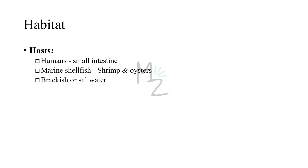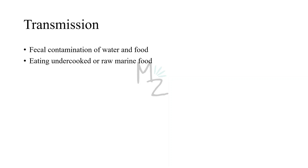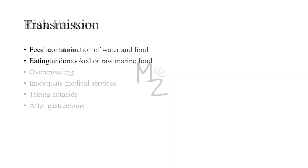Habitat. Human beings are the hosts of Vibrio cholerae, as it causes infections in the small intestine. The main animal reservoirs are marine shellfish such as shrimp and oysters. Vibrio cholerae is also found in brackish or salt water. Transmission. Vibrio cholerae is transmitted by fecal contamination of water and food, and also by eating undercooked or raw marine food.